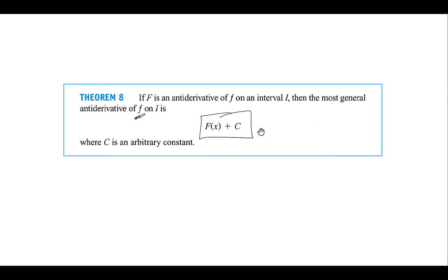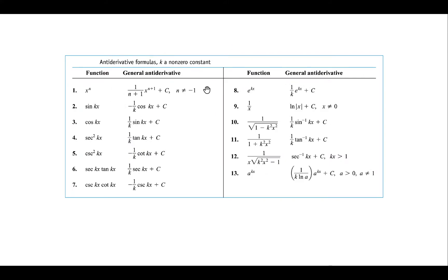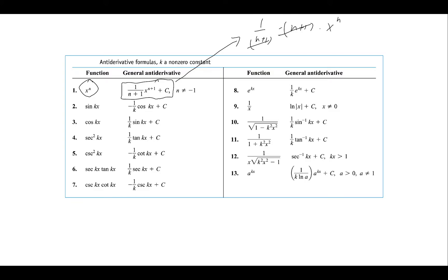Here is a collection of derivatives and their reverse processes. For example, using the power rule, the derivative of x to the power n is n times x to the power n minus 1. Going in reverse, the antiderivative of x to the power n minus 1 is x to the power n. To verify: the derivative of 1 over (n+1) times x to the power n+1 gives x to the power n via the power rule.